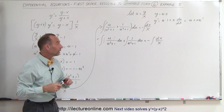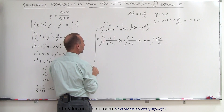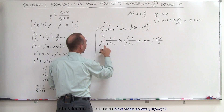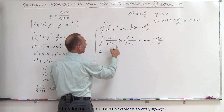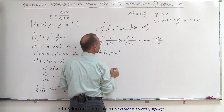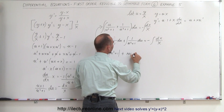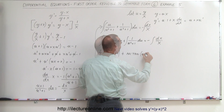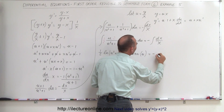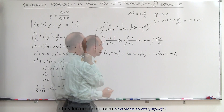Now we have two integrals on the left side. Since the differential of u squared is 2u du, the first integral gives (1/2) times the natural log of (u squared plus 1). The second integral gives the arctangent of u. So the result is (1/2) ln(u squared plus 1) plus arctangent of u, which equals negative the natural log of x plus a constant of integration.